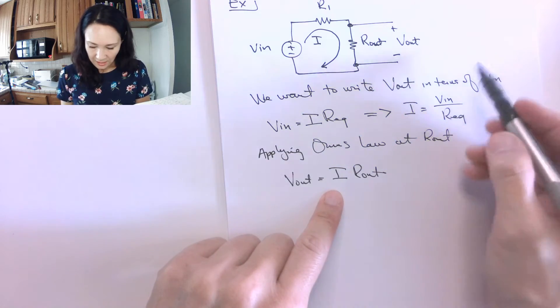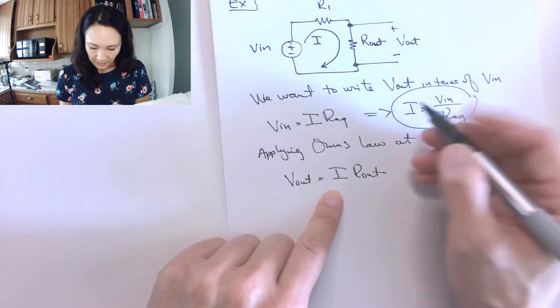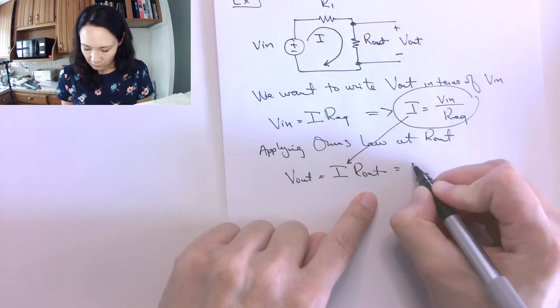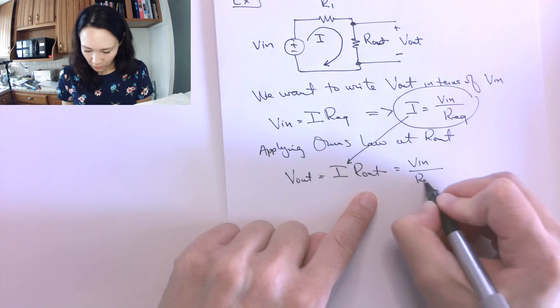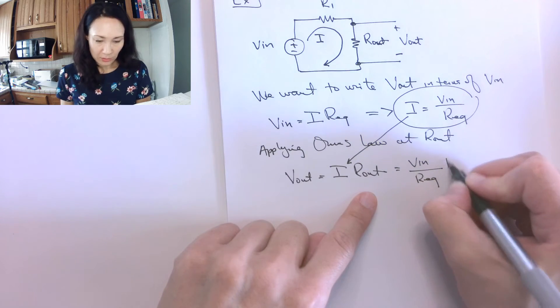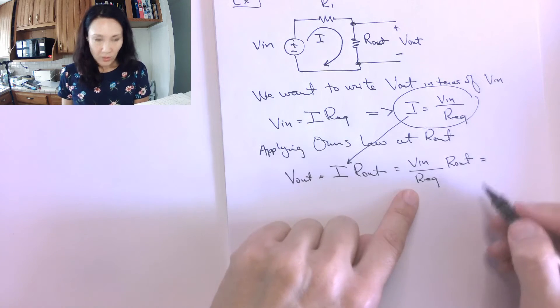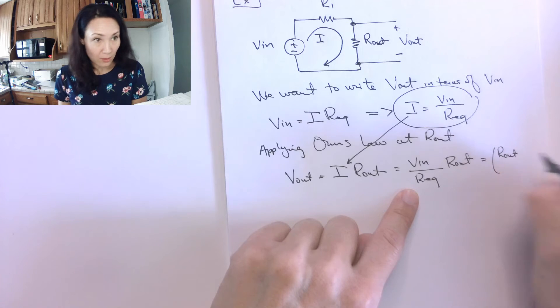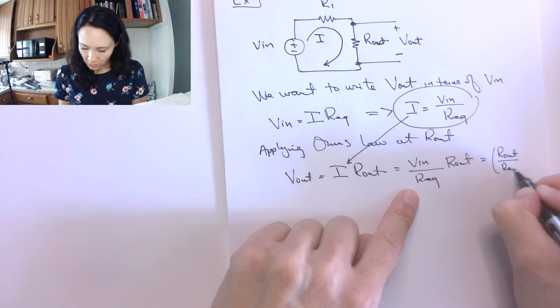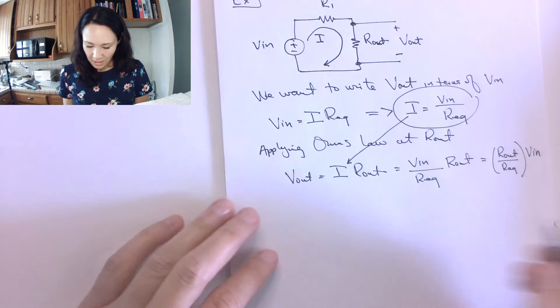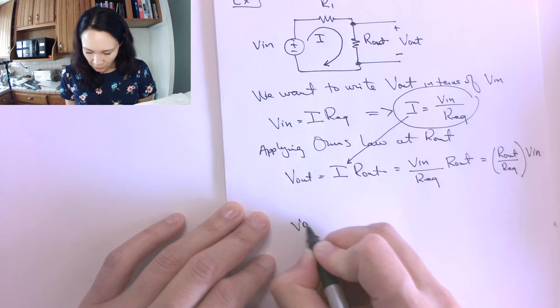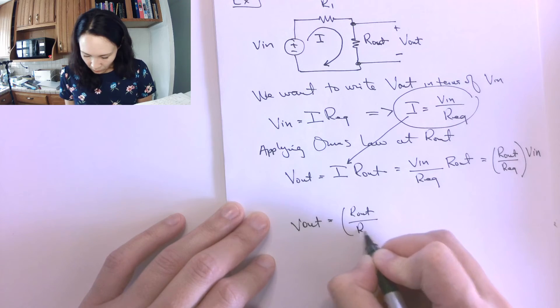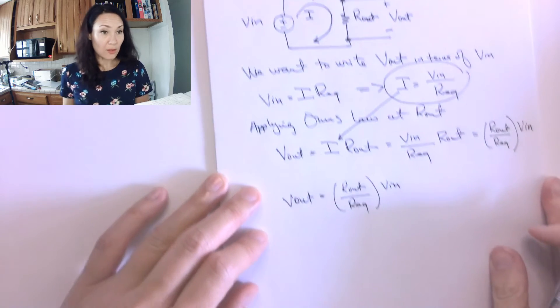So if I take this thing and I substitute it into there, since that's the same current, that's going to give me, in place of i, I'm putting v in over r equivalent, and that gets multiplied by r out. So let me rearrange the terms here. I'm going to put the r's together in a fraction. So I have r out over r equivalent, and that's getting multiplied by v in. This might look familiar to you, because we actually did this when we talked about the voltage divider. So we've seen this already.